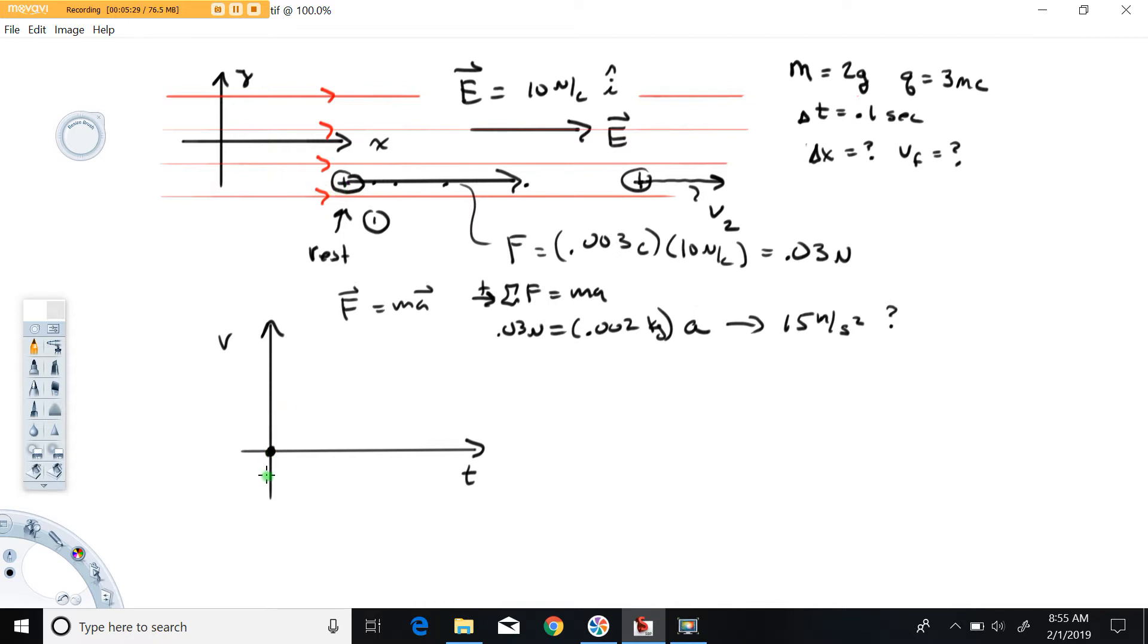If this had an initial velocity to the right, this graph would start up here somewhere. If it had an initial velocity to the left, this would start down here somewhere. But in this case it starts from rest, so zero zero. If we didn't know a time, we would typically just call this some generic time t, but we do have a numerical value here so I'm going to go ahead and put that in.